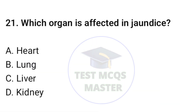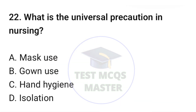Question number twenty-one: Which organ is affected in jaundice? The correct option is C: liver. Question number twenty-two: What is the universal precaution in nursing? The correct option is C: hand hygiene.